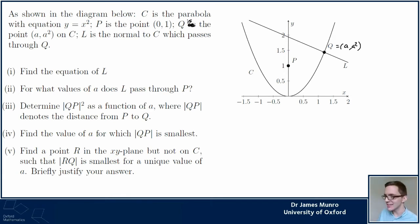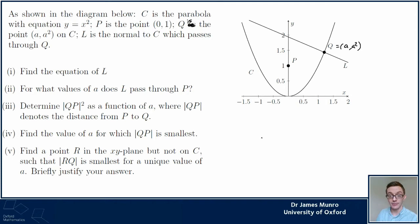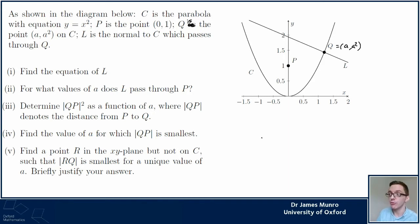In part three they want the length QP² as a function of a. The first two parts seem to be about the line L, but part three is no longer about that normal. So the first part is about dropping a normal from a point to the parabola - finding point Q where the tangent and the line joining PQ are at right angles.